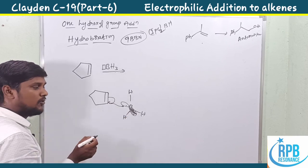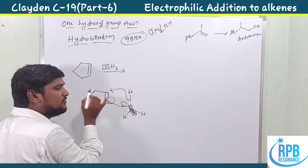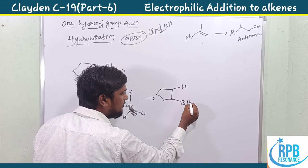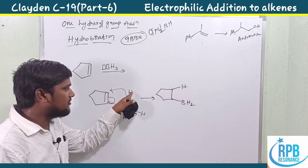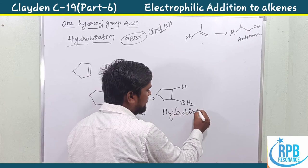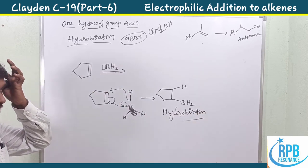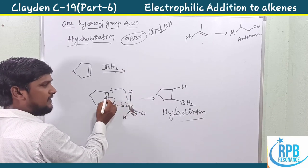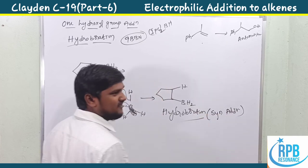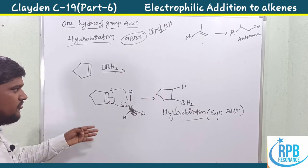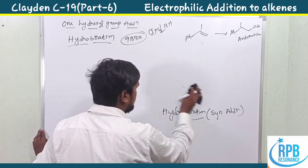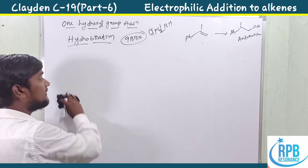The alkene electrons push toward boron's vacant orbital, forming the carbon–boron bond, and the bonded electrons transfer to the olefinic carbon, adding hydrogen. Both hydrogen and boron add to the same side — this process is called hydroboration and is an example of syn addition.